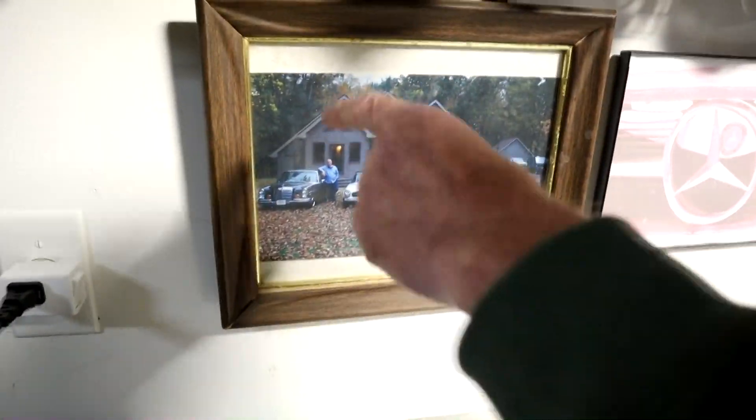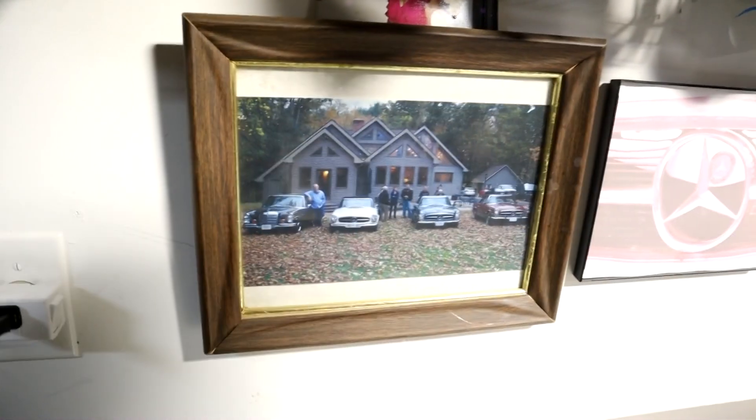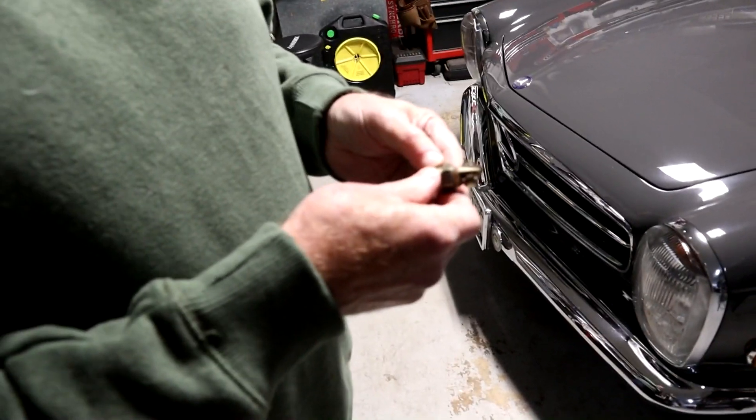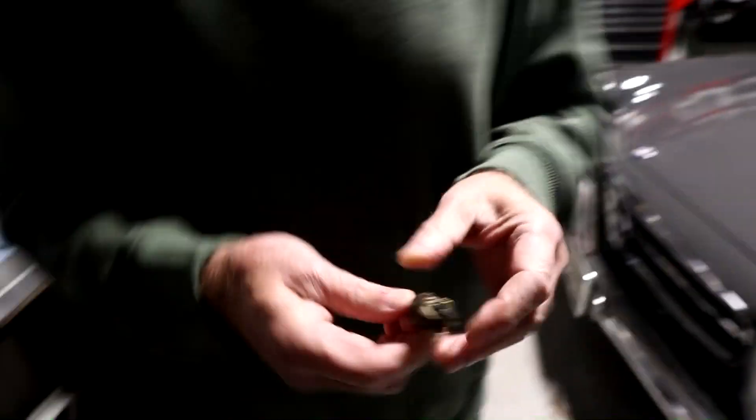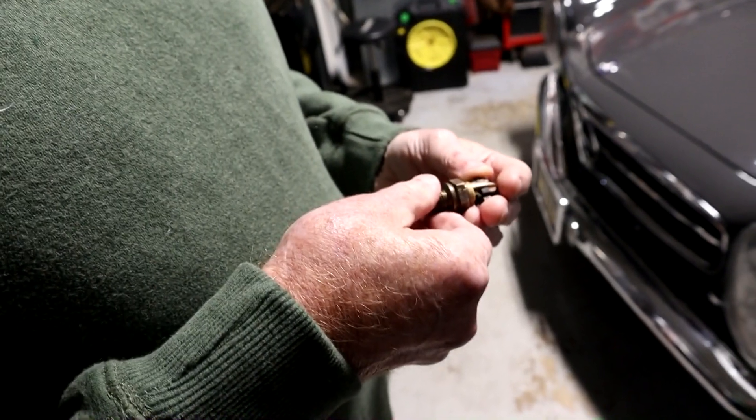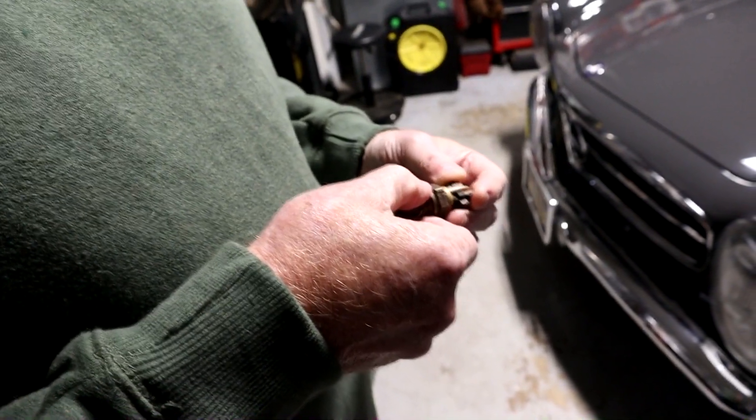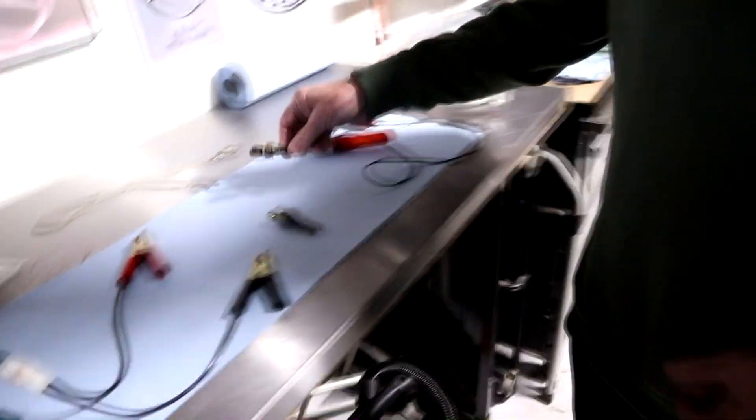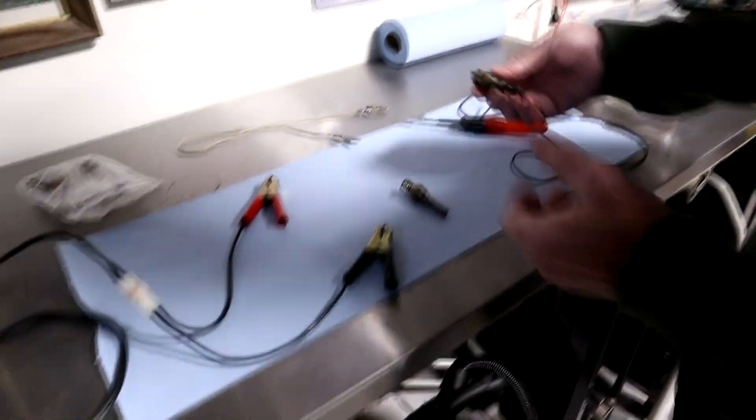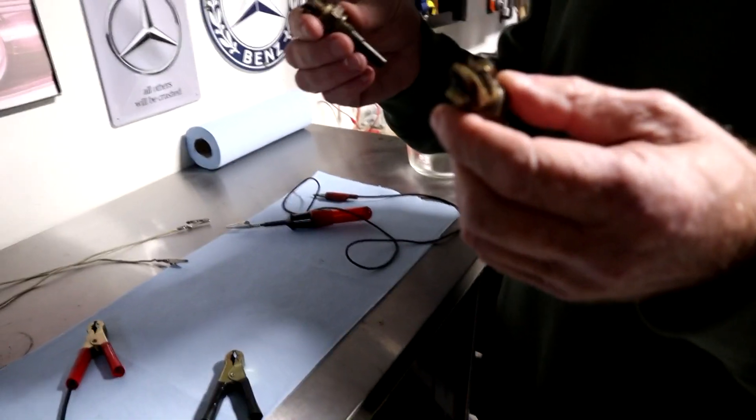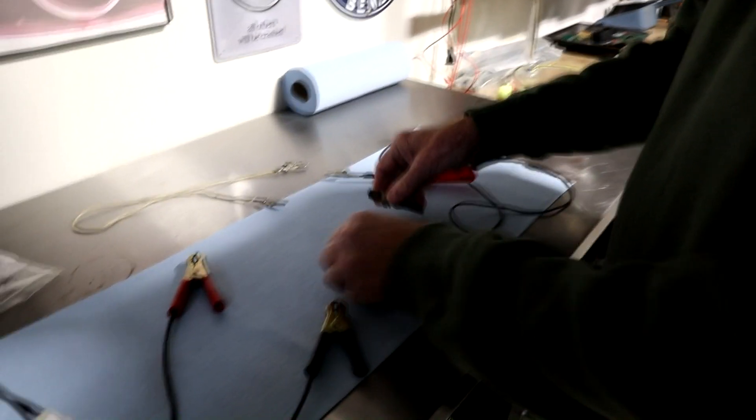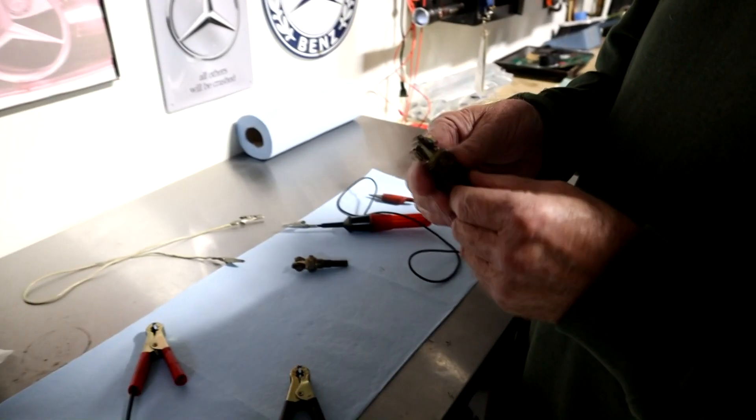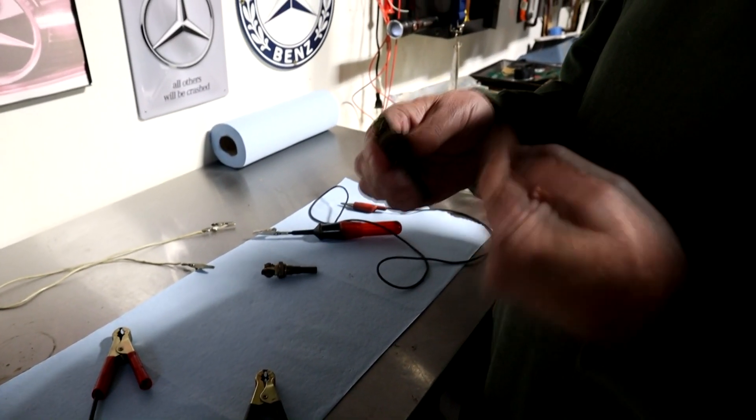Looking at the thermal time switches. This one says minus 20 degrees, 9.5 seconds, and the other one says minus 20 degrees, 12.5 seconds. One is a replacement. These are from a V8, from a 6.3. This has basically a coil wrapped around a bi-metal strip, and at the end it has contacts.